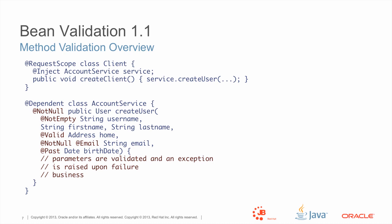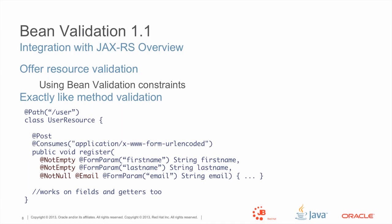Method validation is a feature we wanted from the get-go, but it was also heavily influenced by the need for JAX-RS validation. JAX-RS could have created their own validation framework, but instead they worked with us, the Bean Validation expert group, to reuse Bean Validation — the same logic, the same semantics — inside JAX-RS. So when you want to validate a JAX-RS resource, you just apply Bean Validation constraints on it, and the JAX-RS implementation will delegate the validation to Bean Validation. If you're familiar with Bean Validation 1.0, it seems very logical, and that's really what we wanted to achieve.